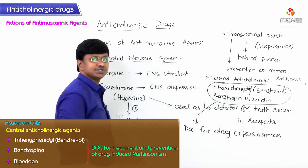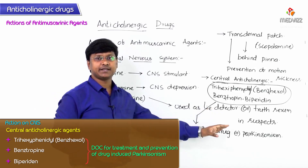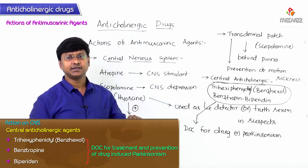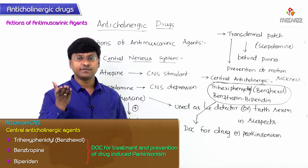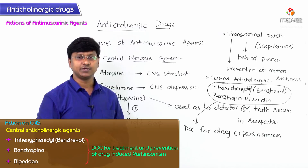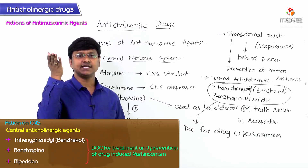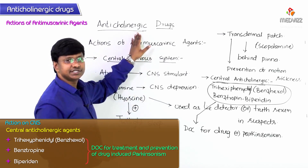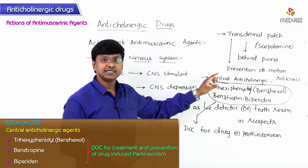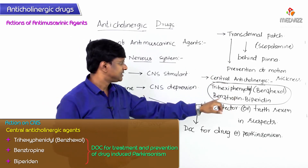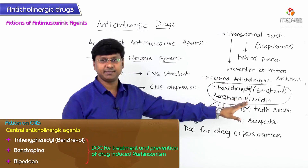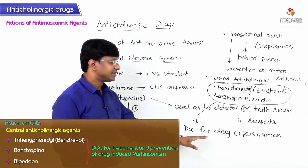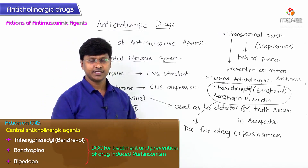In parkinsonism, the condition occurs either because of a decrease in dopamine levels or an increase in acetylcholine levels. The increased acetylcholine levels within the CNS are neutralized by the central anticholinergic drugs — trihexyphenidyl, benztropine, and biperiden — which are the drug of choice for drug-induced parkinsonism.